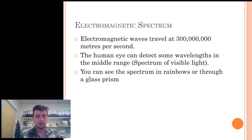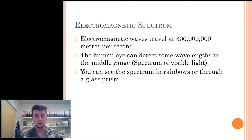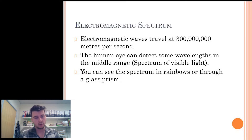Electromagnetic waves travel through a vacuum at the velocity of 300 million meters per second, with a variety of wavelengths and frequencies at different amplitudes or intensities of energy. The human eye evolved to detect a group of wavelengths located in the middle of this range. This is known as the spectrum of visible light.